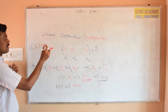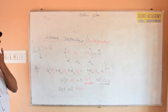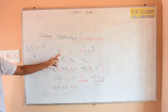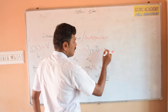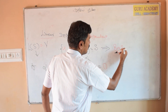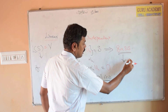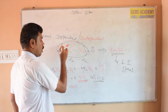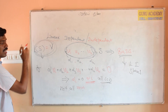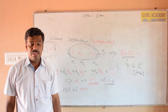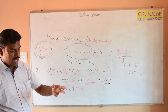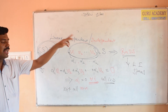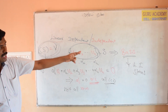So the set S spans or generates V, and it is also linearly independent. When both conditions are satisfied — S spans V and S is linearly independent — then S is called a basis. A basis is a linearly independent set which spans, or equivalently, a spanning set which is linearly independent.